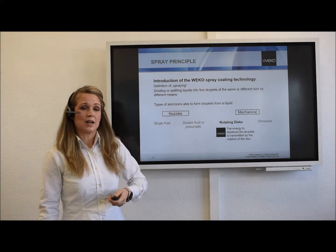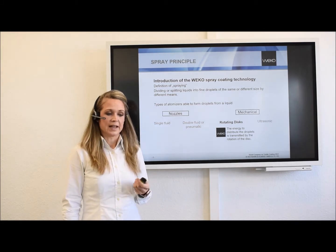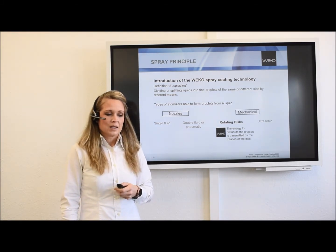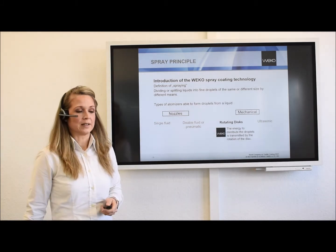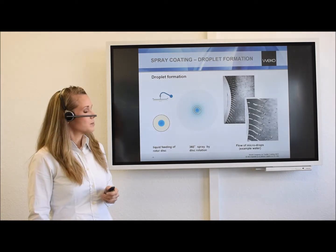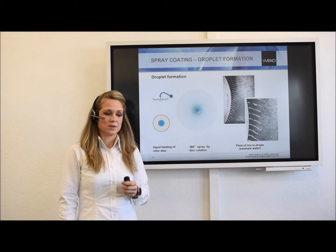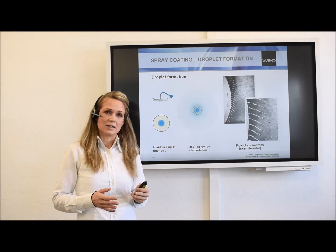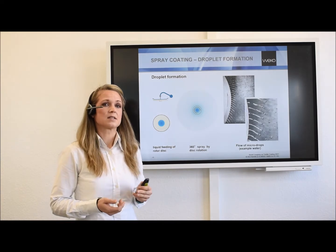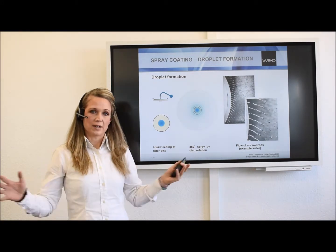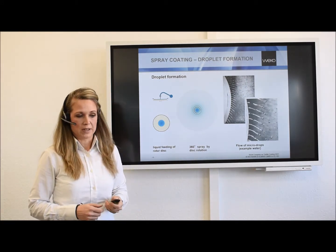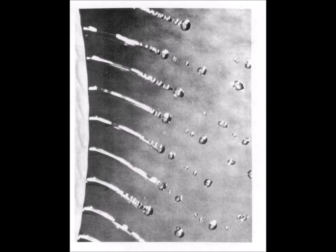The VECO rotor spray system works with the energy that is transmitted by the rotation of the disc to distribute the droplets. The droplet is formed by a liquid supply that is supplied to a disc. This disc spins and rotates, and by the rotation the liquid is spread out and distributed into droplets. As you can see in the picture, this is the classical behavior of water that forms one big and two small droplets.